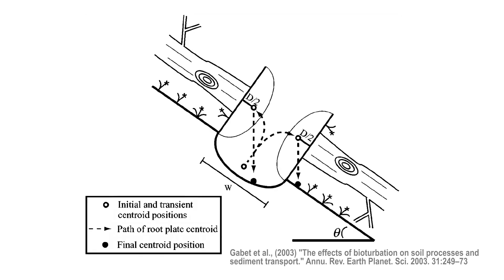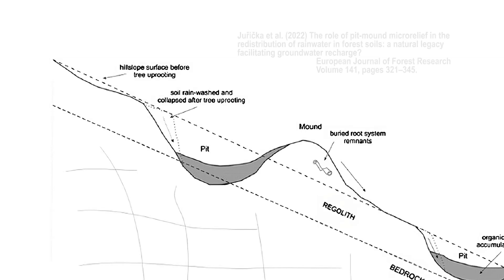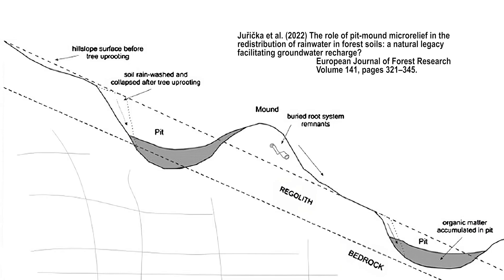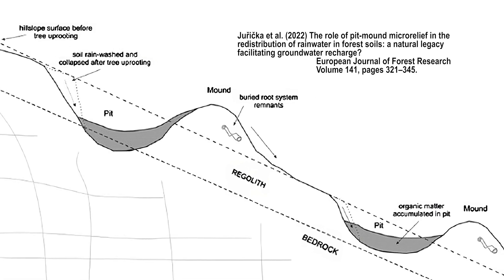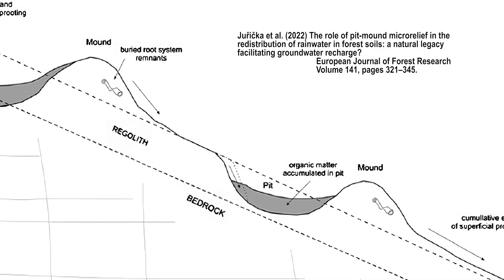The disturbance of sedimentary deposits by living organisms is called bioturbation. The impact of root plates on bioturbation rates becomes particularly noticeable on sloped terrain. The downslope movement of uprooted trees results in higher soil mixing. The upheaved root plates may break up bedrock, transport soil downslope, increase the heterogeneity of soil respiration rates, and stir soil horizons.